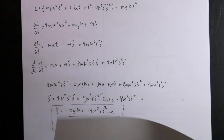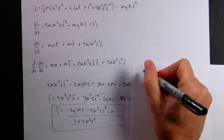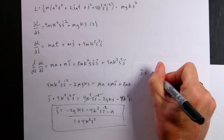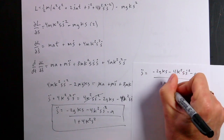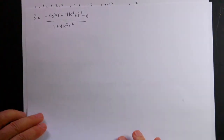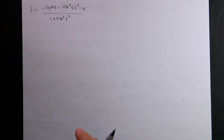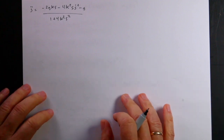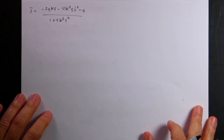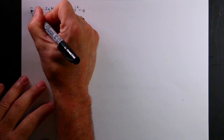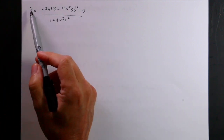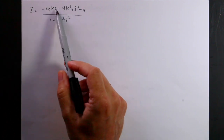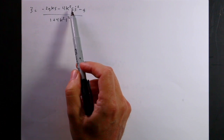Let me rewrite the equation: s̈ = (−2gks − 4k²sṡ² − a) / (1 + 4k²s²). I rewrite equations on a new piece of paper — you should do this too — though I'm afraid of transcription errors. The best way to find those errors is to make them. I'll know if I made one because I can check the answer against what we calculated before. Notice that s̈ depends on both position s and velocity ṡ, which makes it tough to solve analytically.